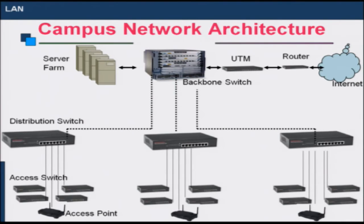In each building, we have a distribution switch, and these distribution switches in different buildings are connected to the backbone switch using fiber optic cables, because these distances are typically long — a few kilometers each. Within each building, we place multiple access switches. The access switches on one hand connect to the end devices — computers or laptops — and on the other hand connect to the distribution switch.